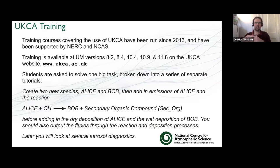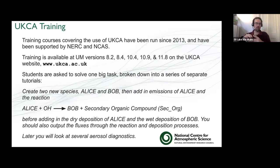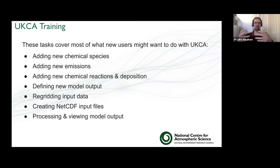The training has been running for quite a long time now, with various support in the past from NERC and NCAS. It's been implemented at lots of different UM versions: older versions using the UMUI, and newer versions using Rose and Cylc. All the training materials are still available on the UKCA website at ukca.ac.uk. Essentially, it's the same training in every version: creating two new chemical species called Alice and Bob.